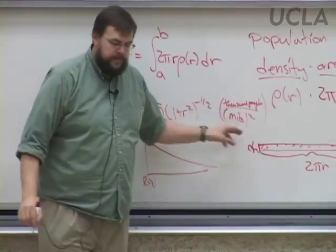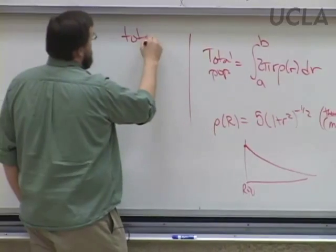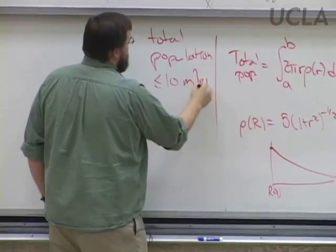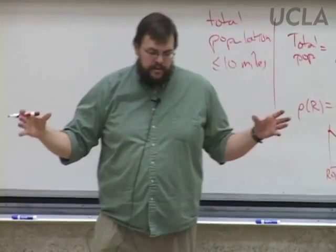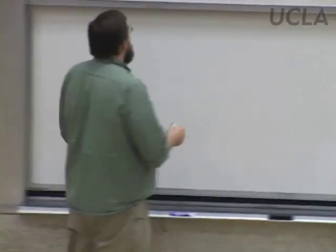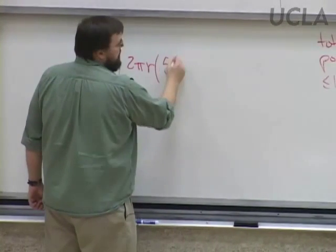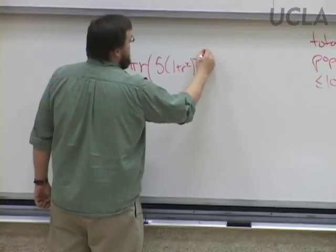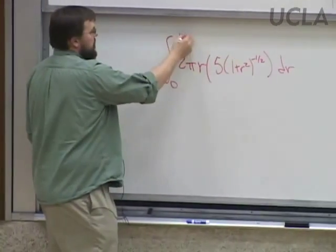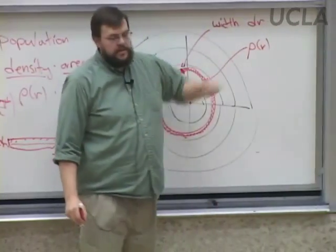We had a very specific example. Suppose the density behaves like 5(1 + r²)^(−1/2) — in units of 1,000 people per square mile. At r = 0 your density is 5, and it goes down from there. Find the total population within 10 miles.